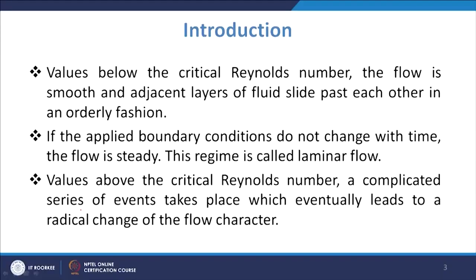There may be diffusion or mixing over a larger bulk — for example, if you have layers 1, 2, 3, 4, and 5, then layer 1 and layer 5 may mix because of turbulence. That is the basic difference. The flow becomes random and chaotic, and that regime is known as turbulent flow.